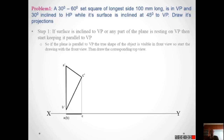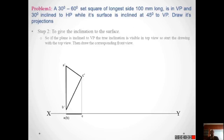Here B is in brackets — why? If you see from the top, A is above and B is below. So B will be hidden or not visible; A is visible because A is above B. That is the reason we are putting B inside the brackets. This is the first step — it is very simple. Next step is to give the inclination to the surface.